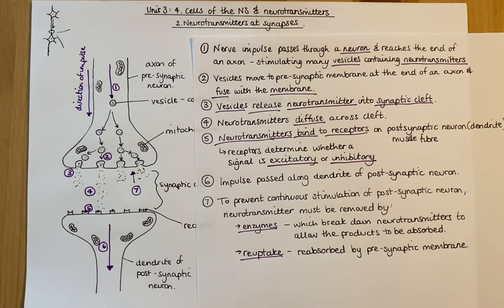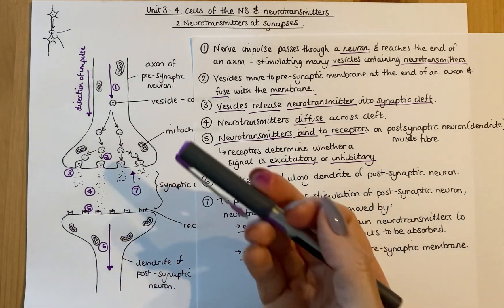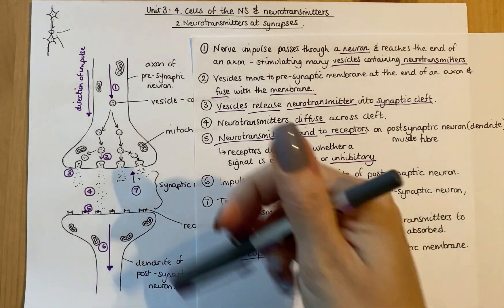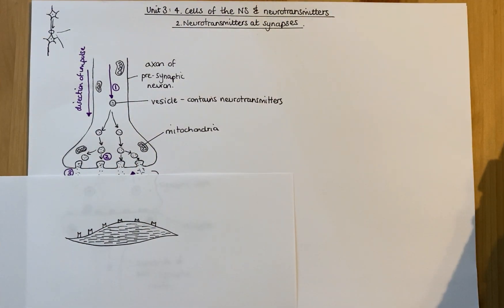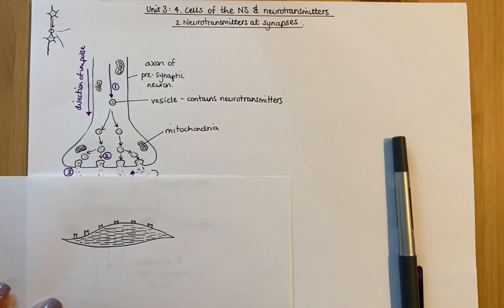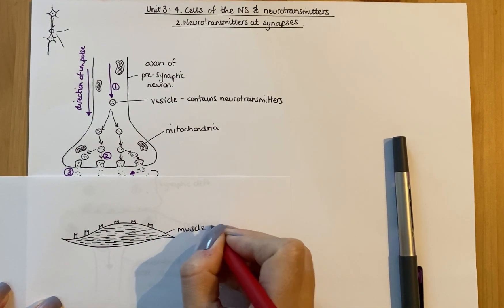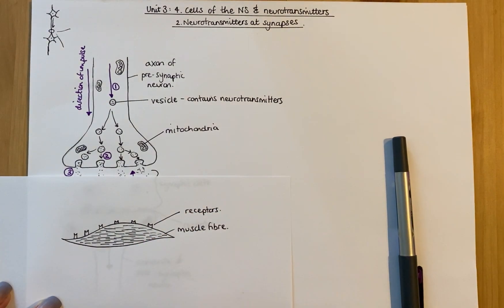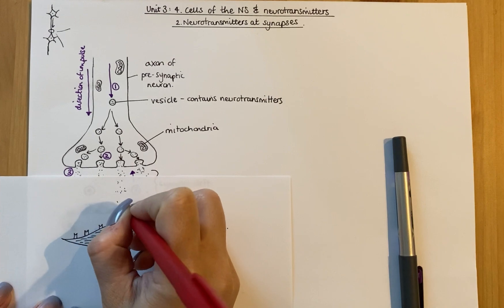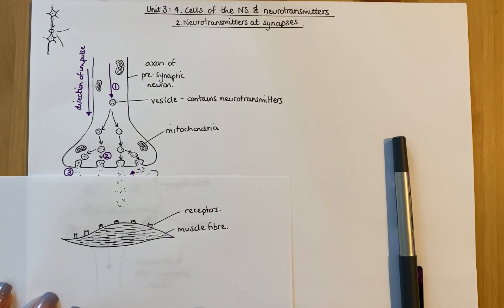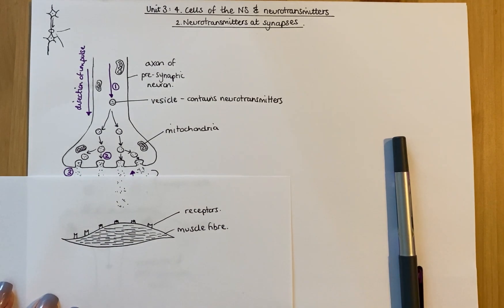A synaptic cleft can also be between a neuron and a muscle fibre, not just two neurons. Here's a quick doodle of a muscle fibre — note the setup is really similar. The neurotransmitter would diffuse across the synaptic cleft and bind to the receptors on the muscle fibre, triggering a response. It would actually trigger that muscle fibre to contract — that would be caused by the electrical impulse.